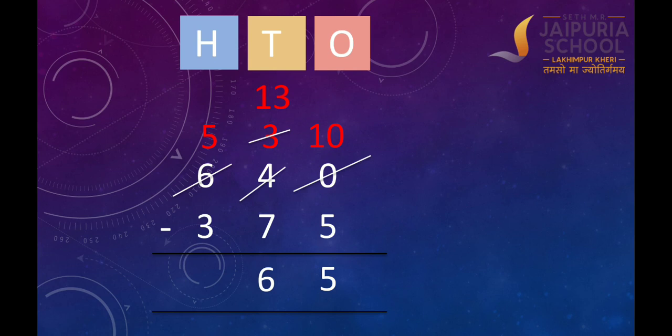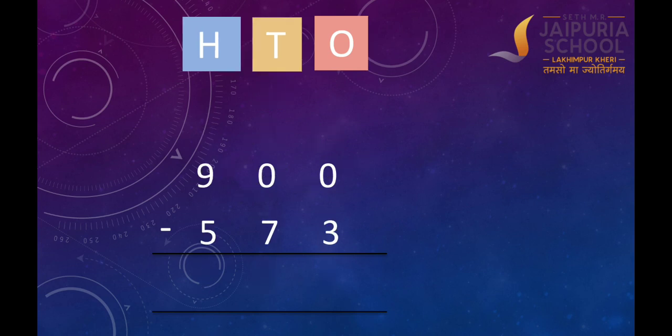Now let's subtract the hundreds. 5 hundreds minus 3 hundreds is equal to 2 hundreds. Let's write 2 under the hundreds column. Now we have got our answer: 640 minus 375 is equal to 265. Now let's do one more problem.